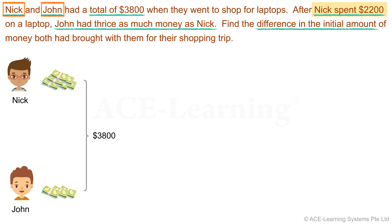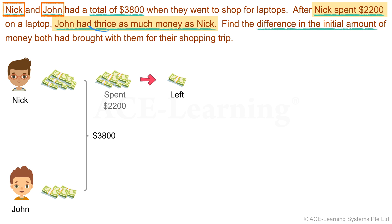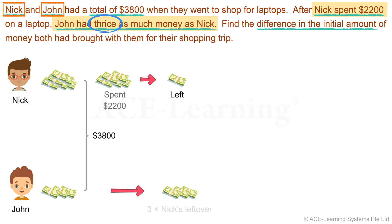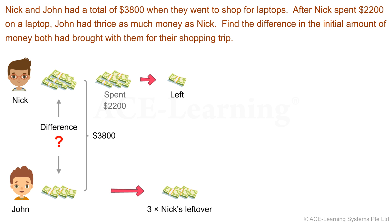Nick spent $2,200. As a result, John's amount of money is now three times of what is left of Nick's money. We have to find the difference in the initial amounts of money both had. Now that we've understood the problem, let's proceed to the next step.